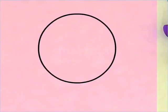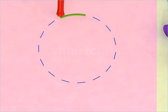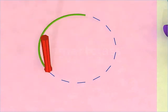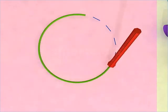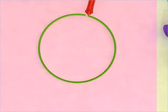Now, look at this figure. Again, run your pencil along its outline. What do you see? You have come back to the same point from where you began.